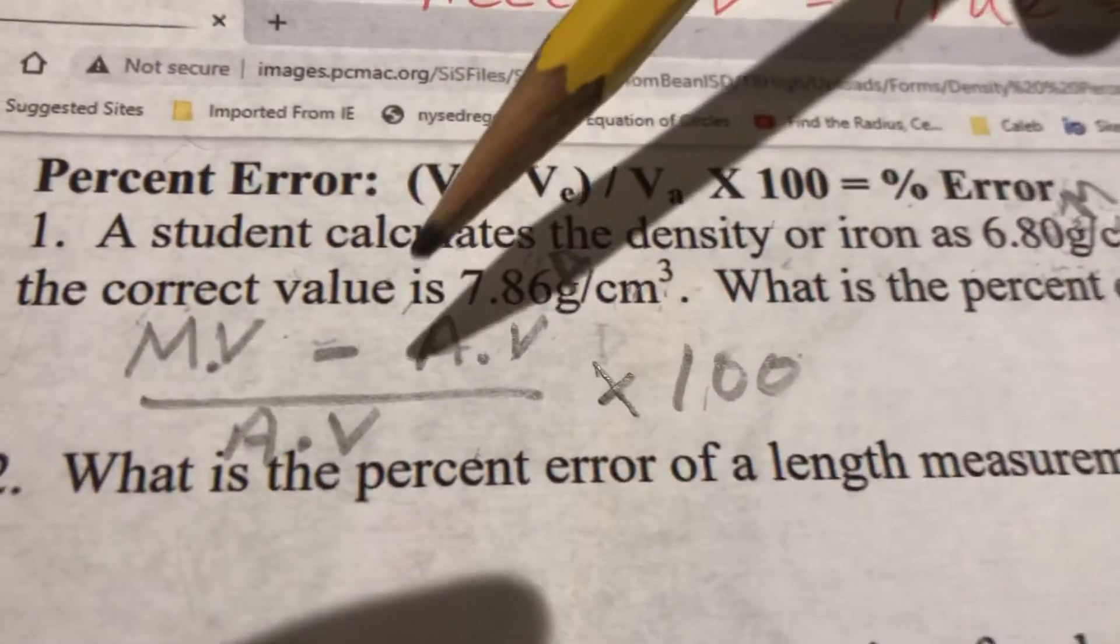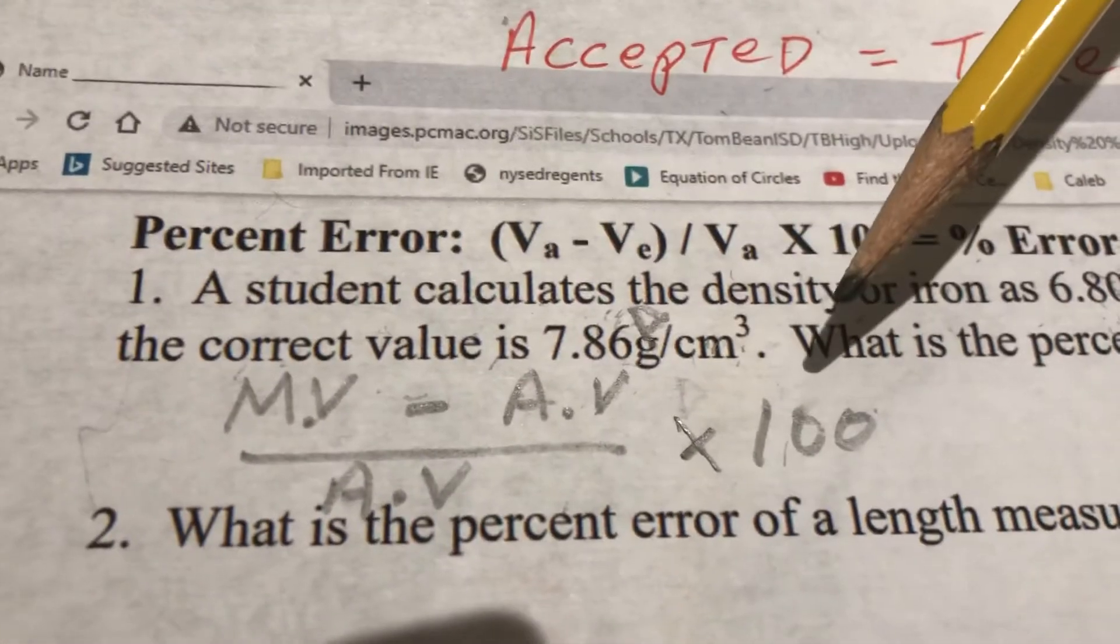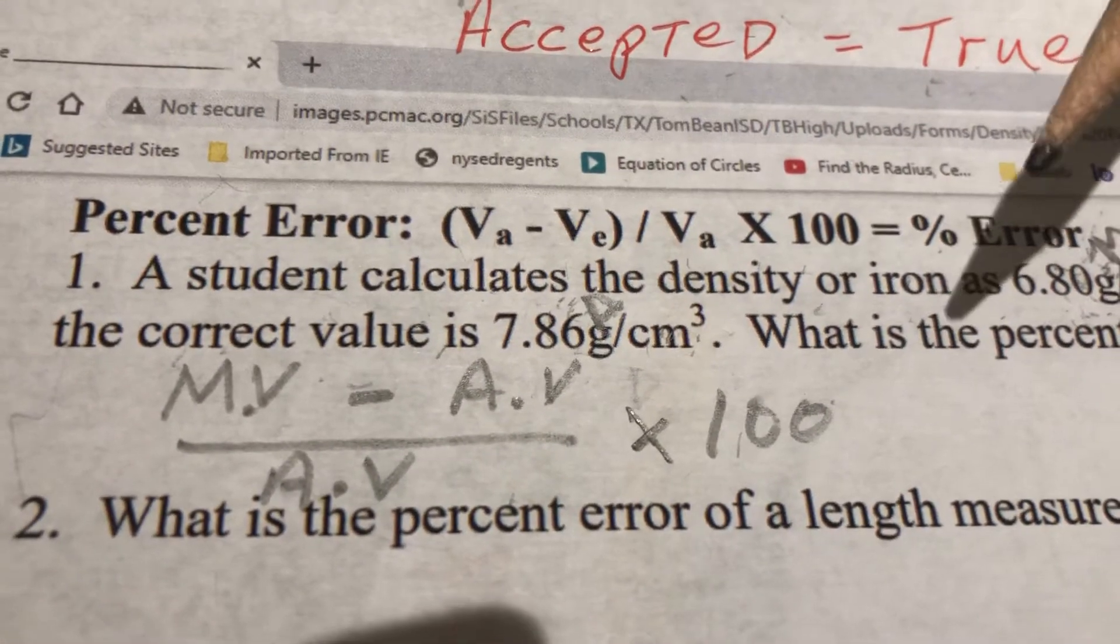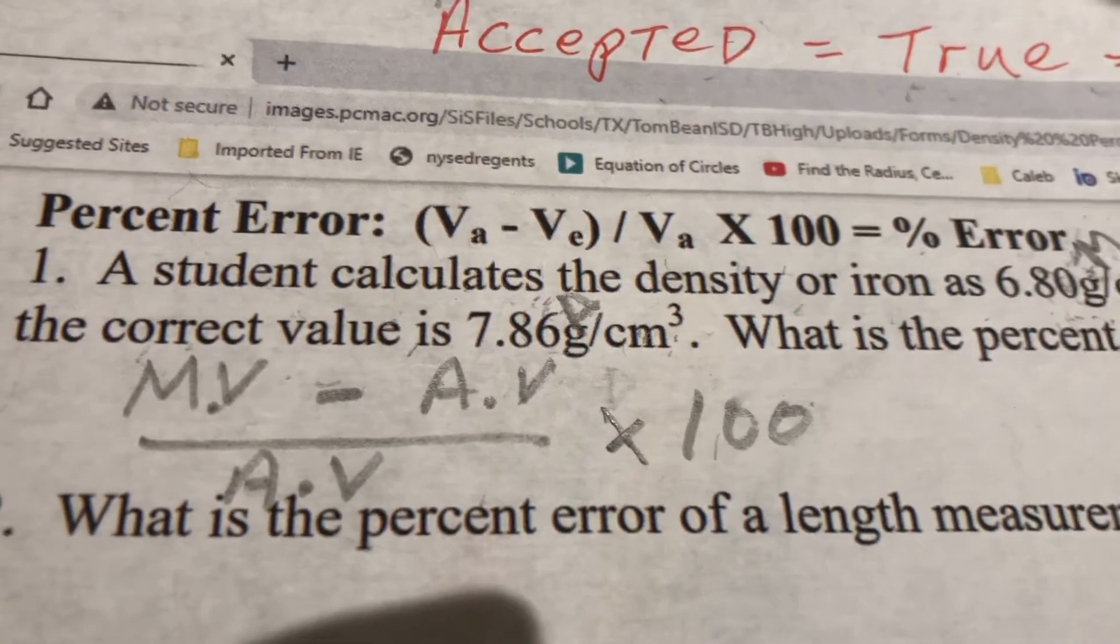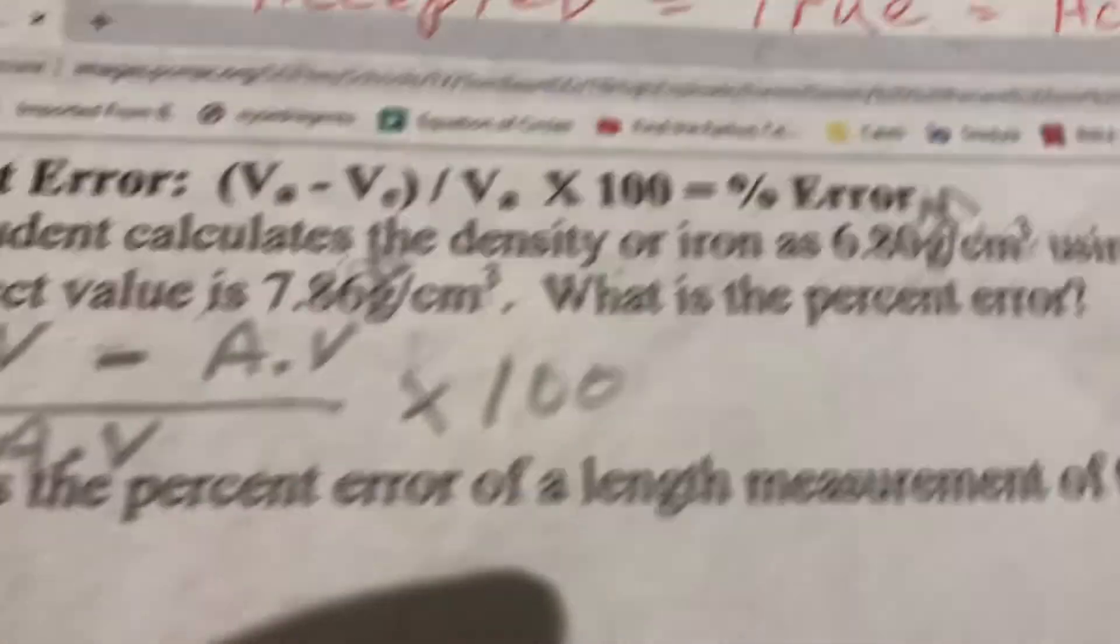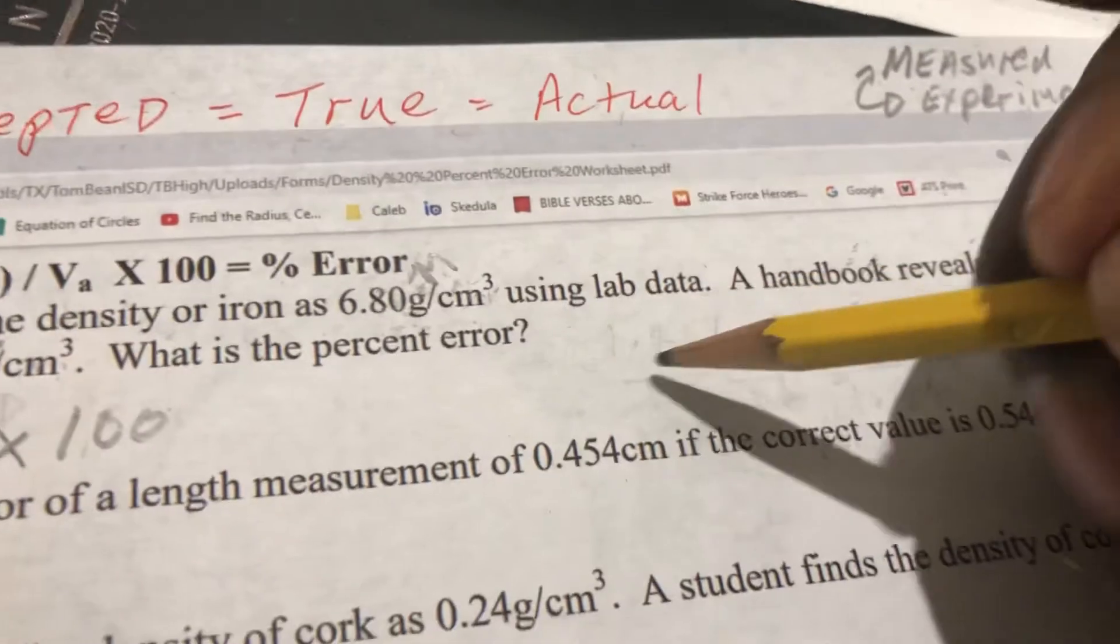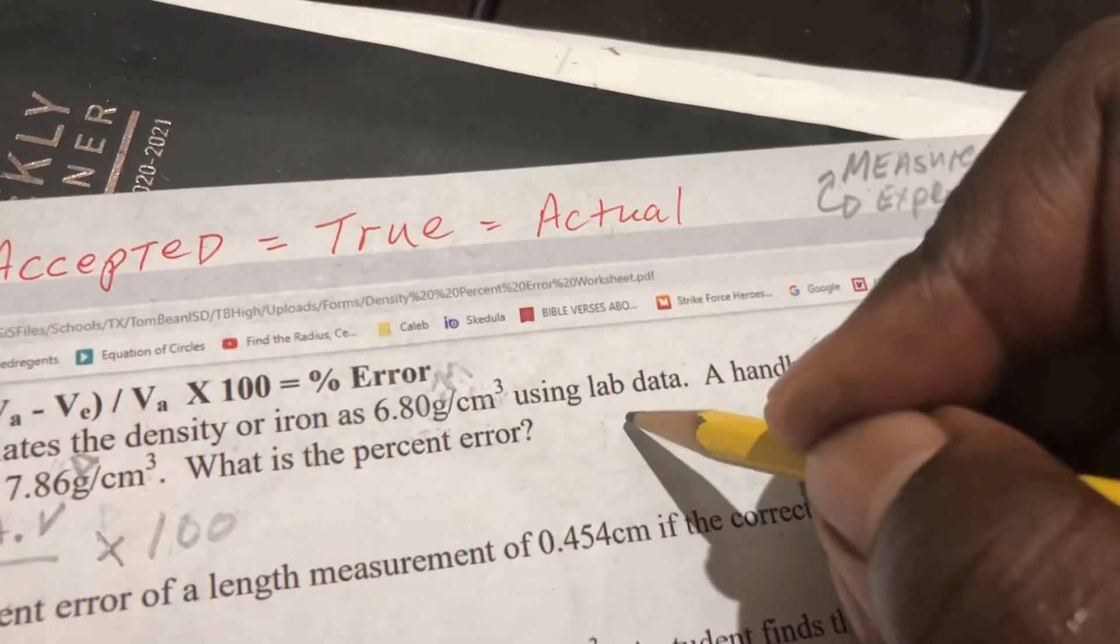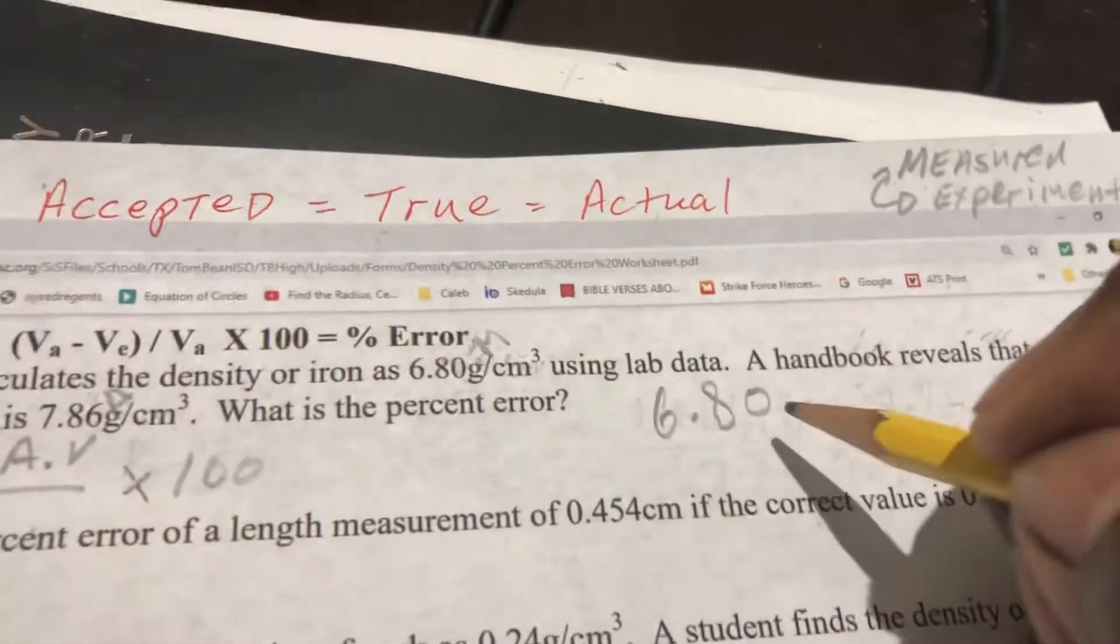So what's going to happen is they're going to use this formula to now figure out how their accuracy holds up in terms of a percentage. So looking on our reference tables, we have it here already. MV is a measured value. So measured value is what? It's 6.80. So you're going to write that down, people.